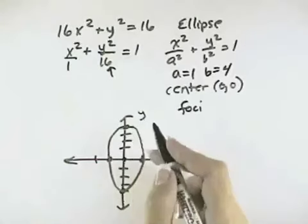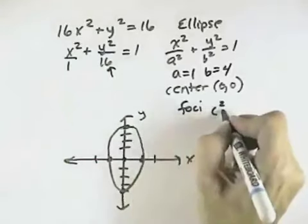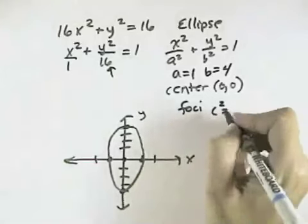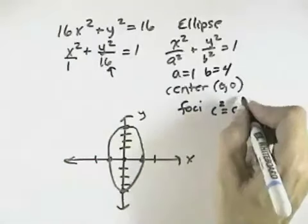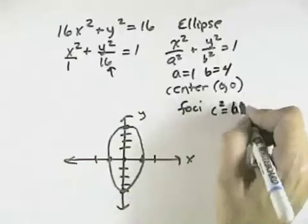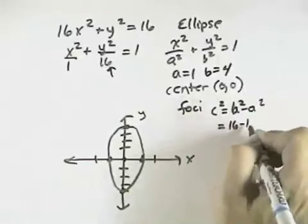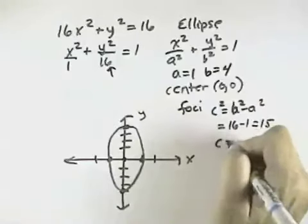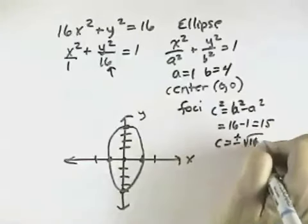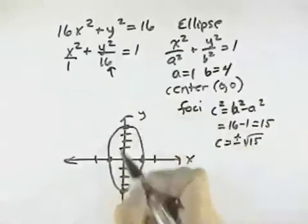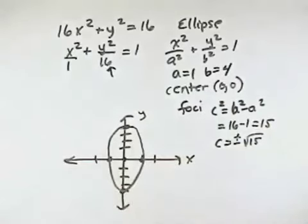If we wanted to find the foci for this one, we'd have c squared. c is a distance from the center for our foci. And it would be b squared minus a squared, which would be 16 minus 1 is 15. And taking the square root of that, then we'd have plus or minus the square root of 15, which would be more than 3 units in each direction, very close to each of our endpoints.